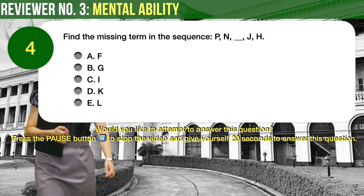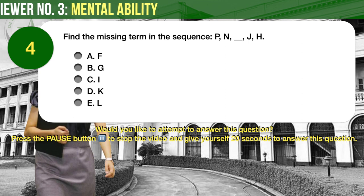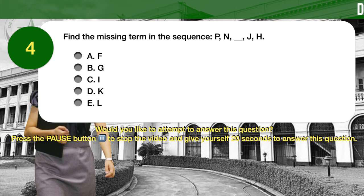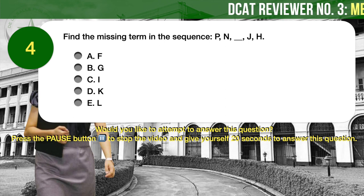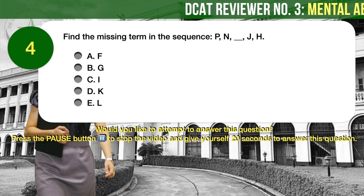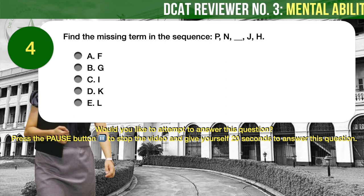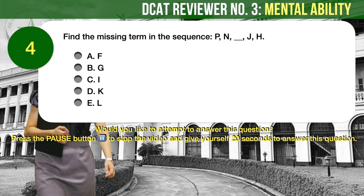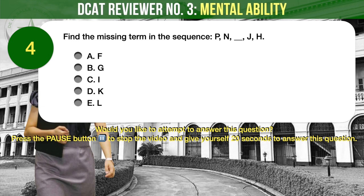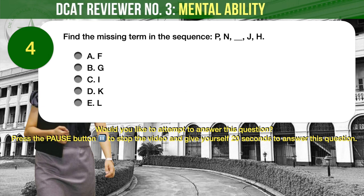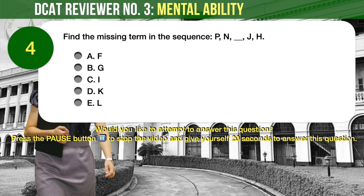Question number 4. Find the missing term in the sequence: P, N, __, J, H. A: Letter F. B: Letter G. C: Letter I. D: Letter K. E: Letter L.